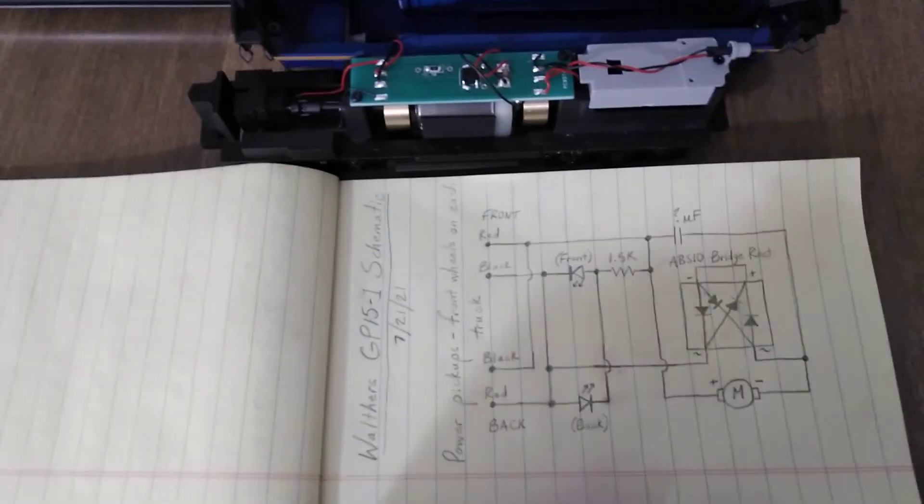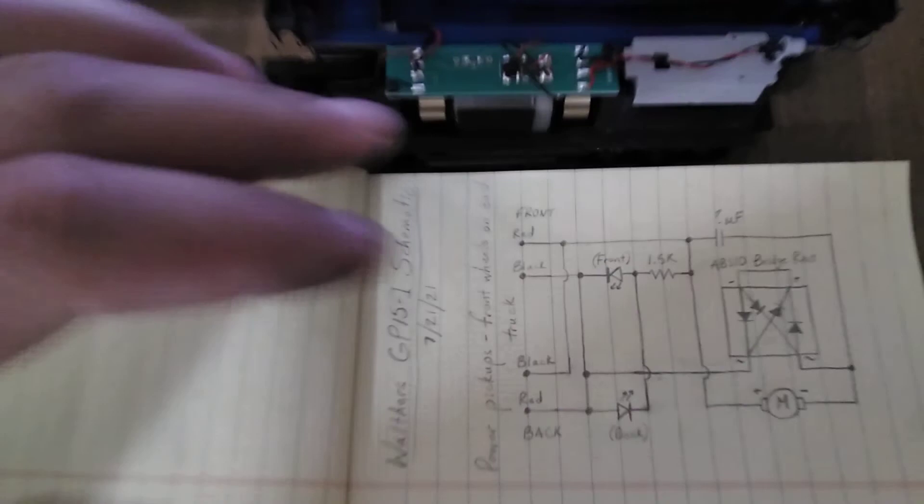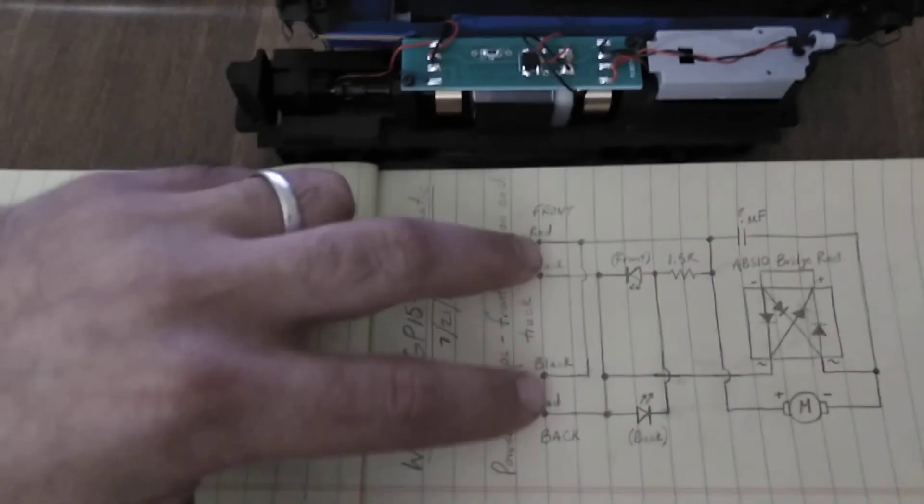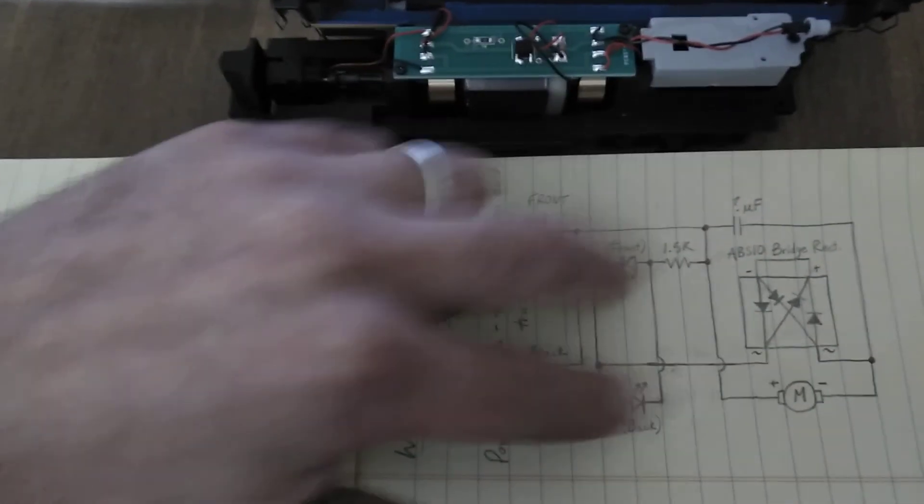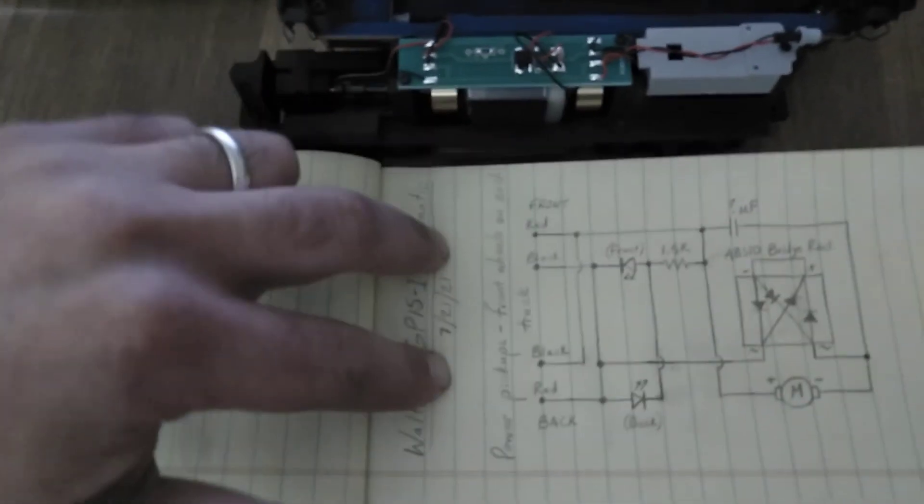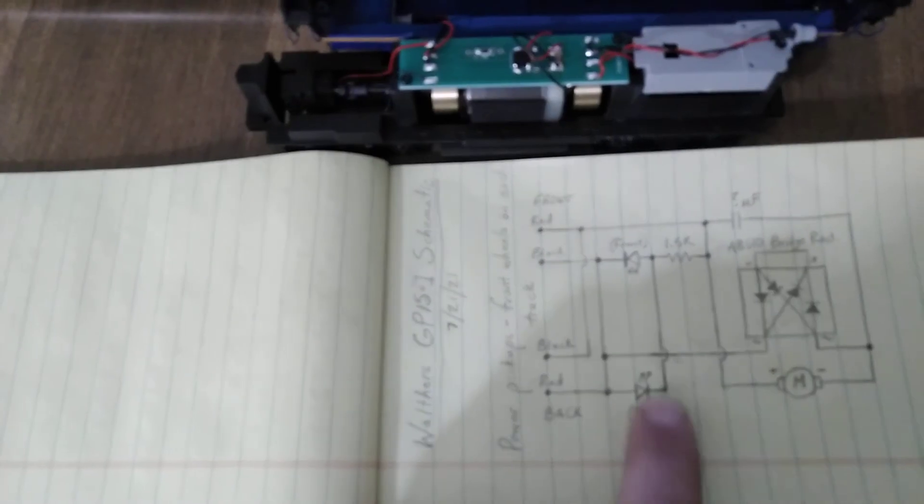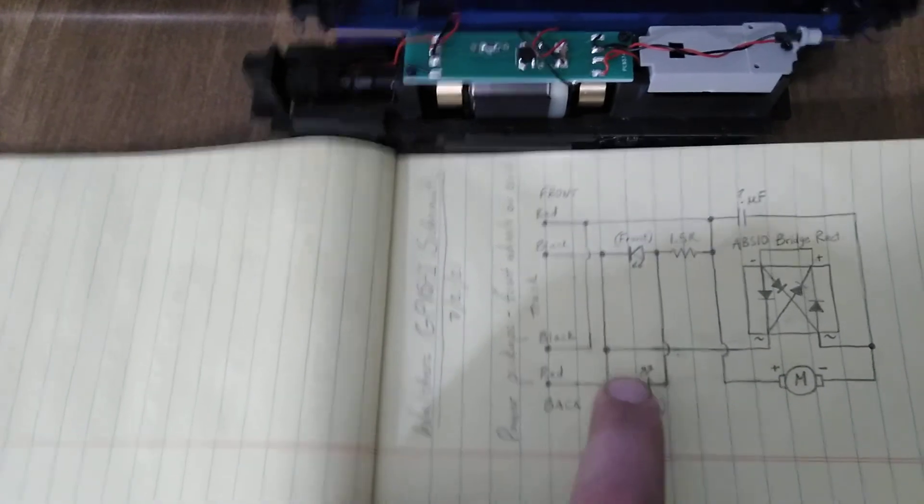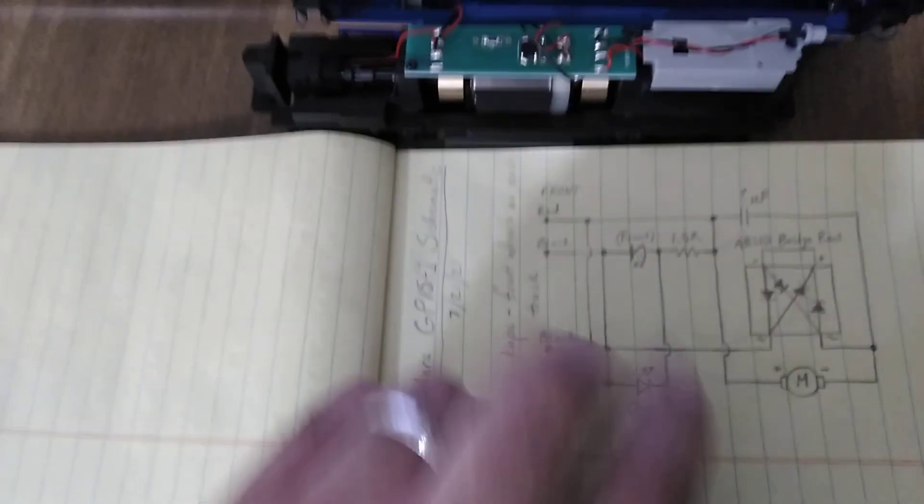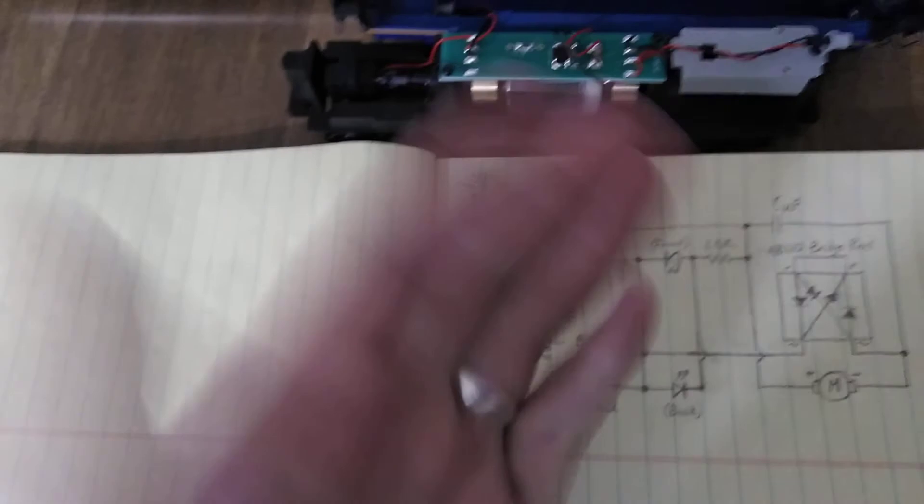Now say we want to go in reverse, so current will flow this direction and then back this direction down to the other rail. Current will flow this way, it'll flow through the back LED this time, and it'll try to flow through the front—well it won't really try, it just won't be able to.